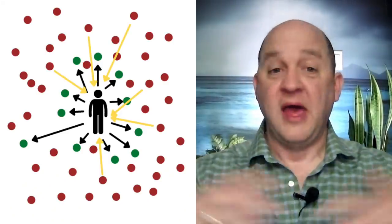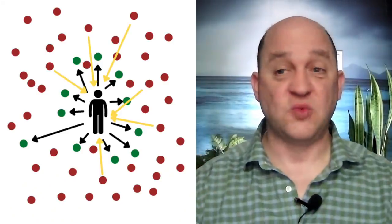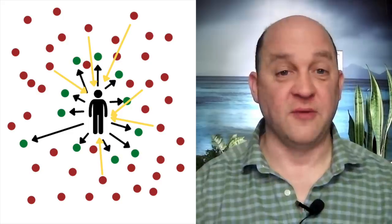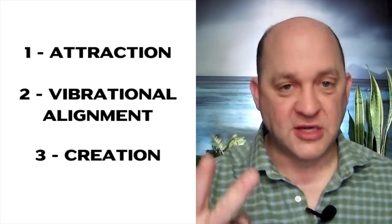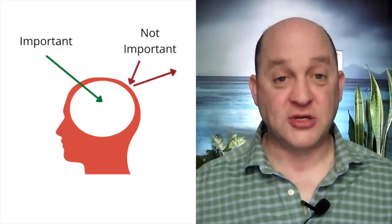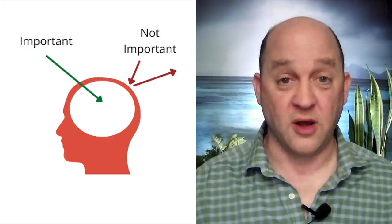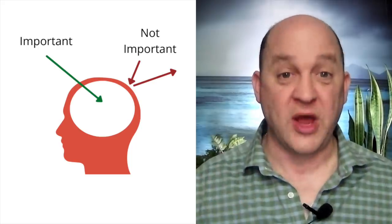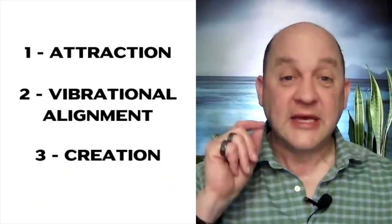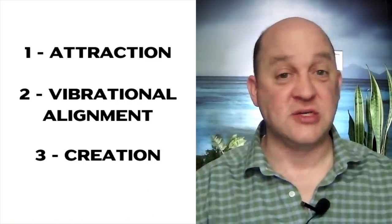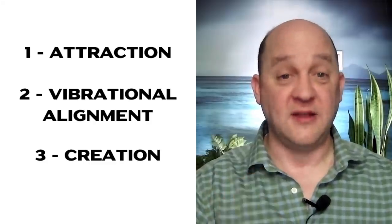So there we have the three phases of manifestation. The attraction phase brings resources from out in the world — where we don't know about or can't use them — into our own personal world. Then vibrational alignment ensures we are actually aware of those resources, recognize them, and can use them. And phase three, creation, is actually taking action and leveraging those resources to create the changes we want in our lives and in the world around us.